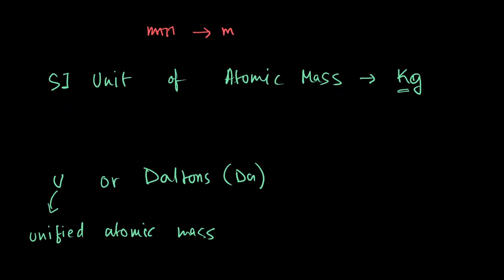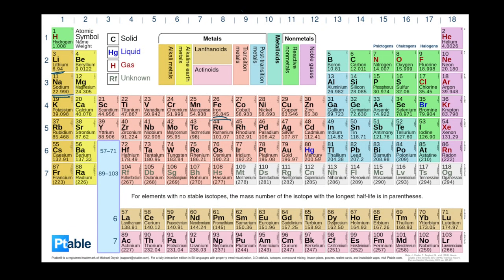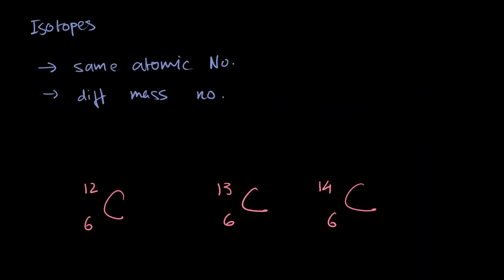Now why is the atomic mass in fractions? Well, because it is the average of all the available isotopes - the average mass of all the available isotopes.